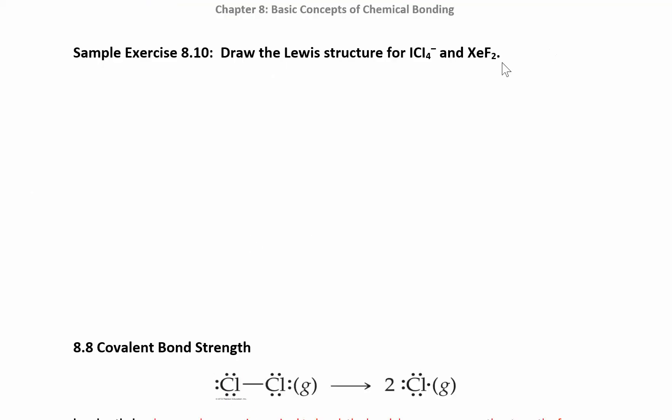All right. So let's try a couple more of these. Pause the video and you can work through these on your own. Let's see. ICl4. So I has seven. Chlorine has seven. And I have four of those. So that's 28 and seven. That's 35. And I have a negative charge. So add another one. That's 36.